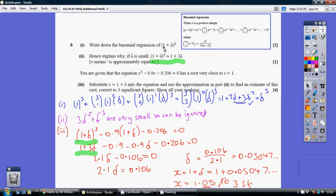We've got a being 1, and b being delta, and n being 3. So just working my way through, substituting straight into this, we get this here, which then if you multiply out gives us 1 plus 3 delta plus 3 delta squared plus delta cubed.